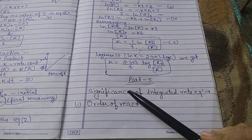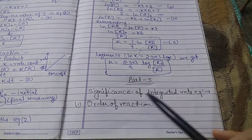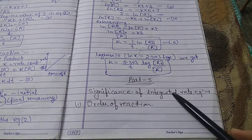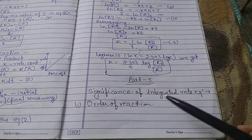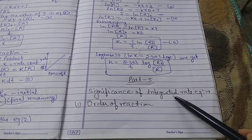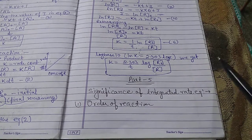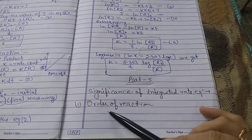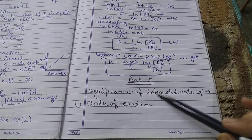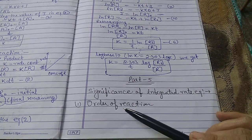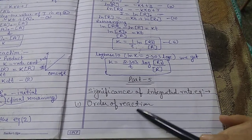Part 5 of the lesson in chemical kinetics is the significance of the integrated rate equation. The integrated rate equation can be used in various ways. The first significance is the order of reaction.